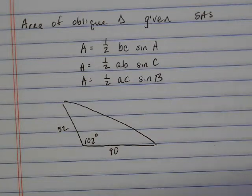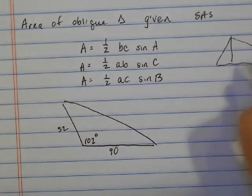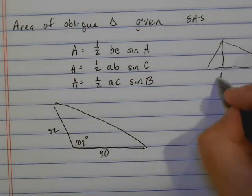You can also find the area of an oblique triangle. Before, we would have a triangle and try to find a height, and we would do one-half height times base.